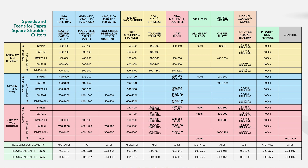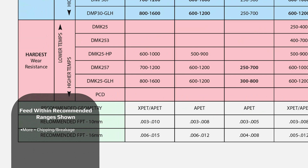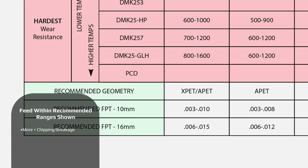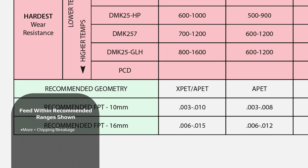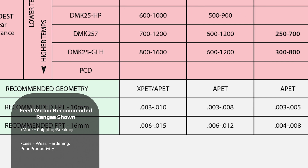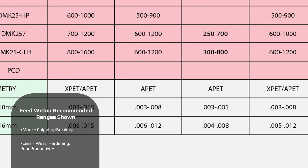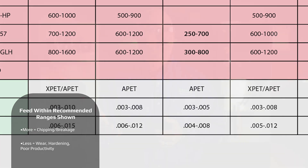This chart may also indicate a recommended cutting edge geometry to use for each material group. It's important to feed within the recommended range shown for that cutting tool. Feeding the tool at more than the recommended feed per tooth could result in tool breakage. Feeding less than the recommended range could cause premature wear, material work hardening, and poor productivity.